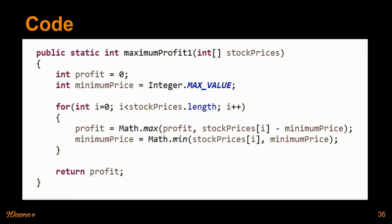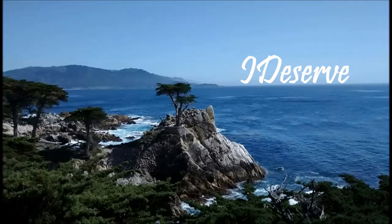Let's quickly look at the code. This is the function signature where it takes the stock prices. We track the profit and the minimum price. The loop runs exactly the same as discussed through the animations — it's pretty straightforward. Please leave any questions or comments below the video. Thank you for watching. I'll be uploading three more types of problems related to buying and selling stocks; each question is harder than the previous one — this was the easiest. Please subscribe to the channel. Stay tuned. Thank you.